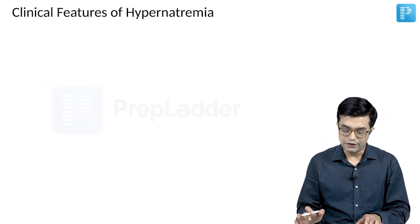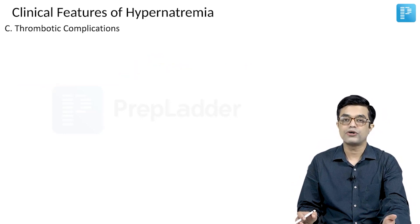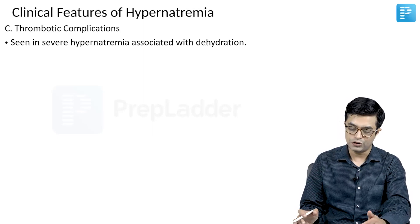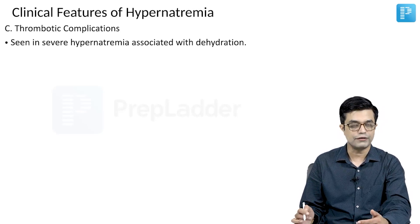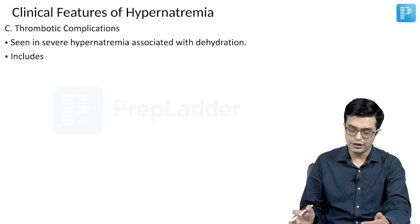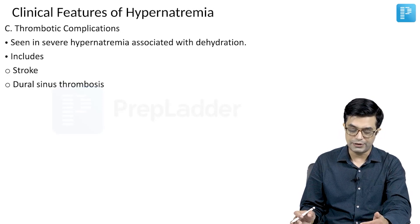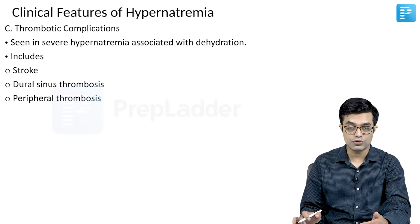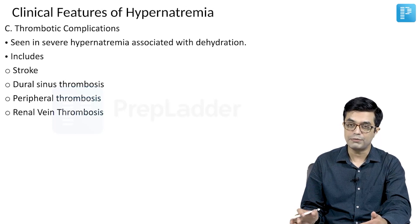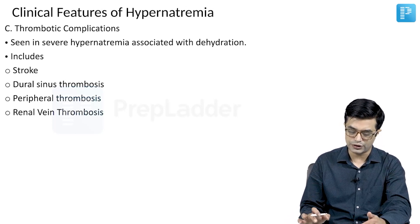Moving further, thrombotic complications can also occur, seen in severe hypernatremia associated with dehydration. These include stroke, dural sinus thrombosis, peripheral thrombosis, and RVT — that is, renal vein thrombosis.